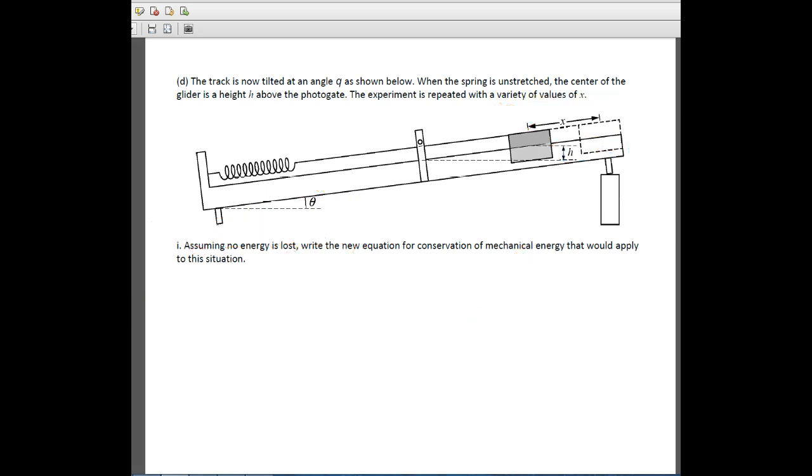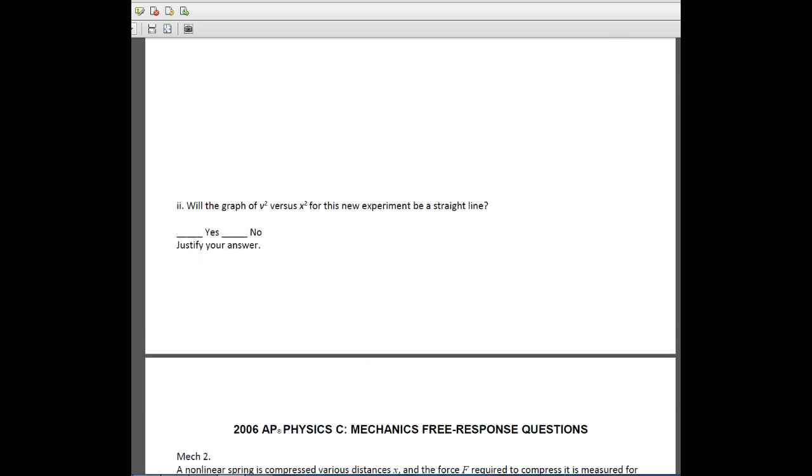The last part of this problem asks you to answer the question, will a graph of v squared versus x squared for this new experiment be a straight line? Absolutely not. It won't be because this plot is only a v squared versus x squared, and this is just the compression. Where is the gravitational potential energy? So where is u g? It's not in here. So that would curve this one way or the other.